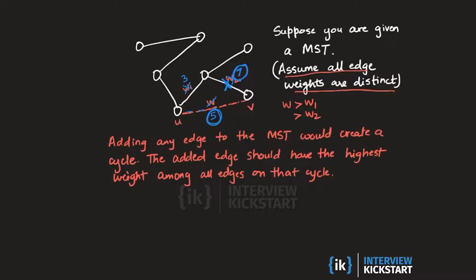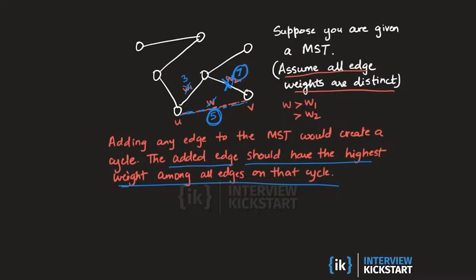That is impossible if we were originally given the minimum spanning tree. This means that if you are given the MST it should never be possible to further lower its total cost by adding an edge and then removing one of the edges along the spanning tree to deal with the cycle. So this kind of adjustment should be impossible, which is why the added edge will always have the highest weight among all edges on that cycle — otherwise we could always improve the MST further by removing the most expensive edge on the cycle.